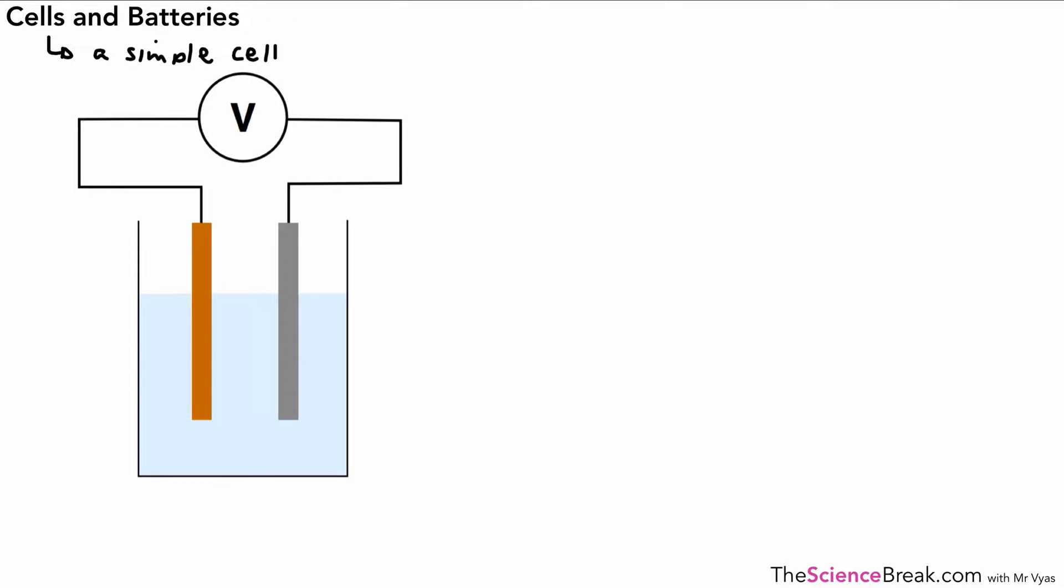We can take a look at a very simple cell, which is quite easily made in the lab, and in fact you can make it with a lemon and a couple of metals, believe it or not. But here we have the example. We've got what we call a container with what we call an electrolyte in blue there, and two metals.